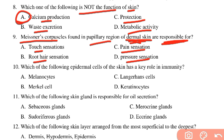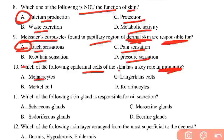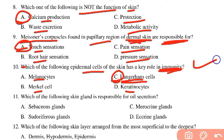Epidermal cells of the skin play a key role in immunity. The special cells of the epidermis include melanocytes which determine skin color, Merkel cells which are nerve endings, Langerhans cells which are macrophages or white blood cells, and keratinocytes which are keratin-producing cells. Langerhans cells are one of the immunity components of the integumentary system.